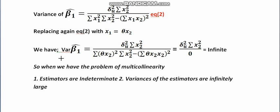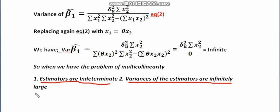So what we can finally infer from the above results is: if we have the problem of multicollinearity, the estimators will be indeterminate, and the variances of the estimators will be infinitely large. That's all for today, thank you.